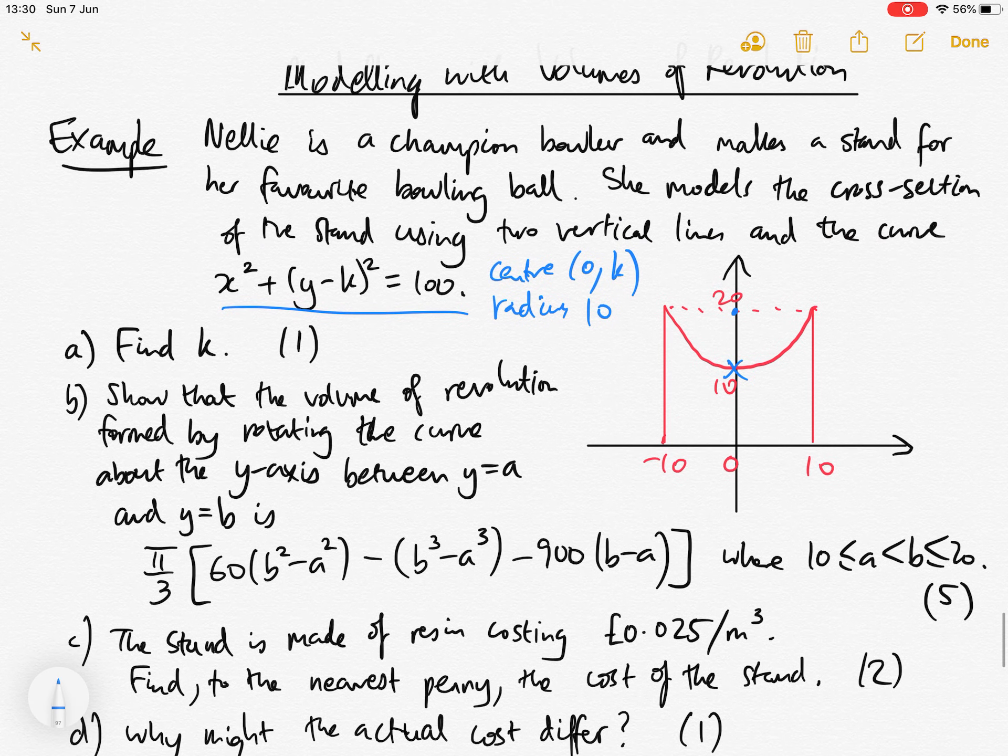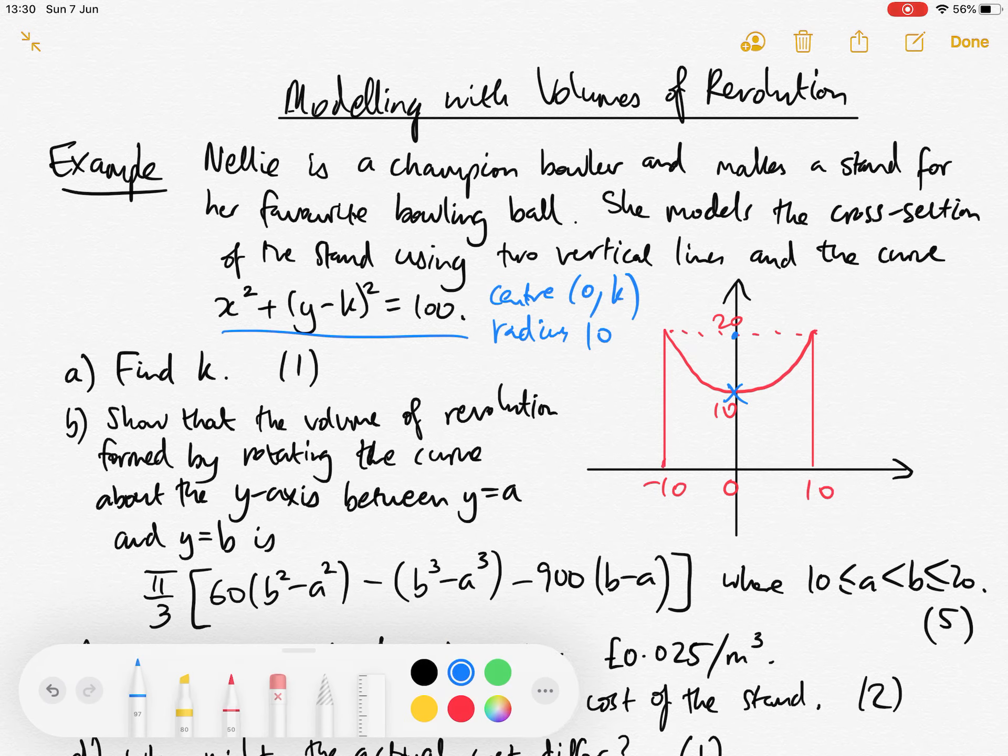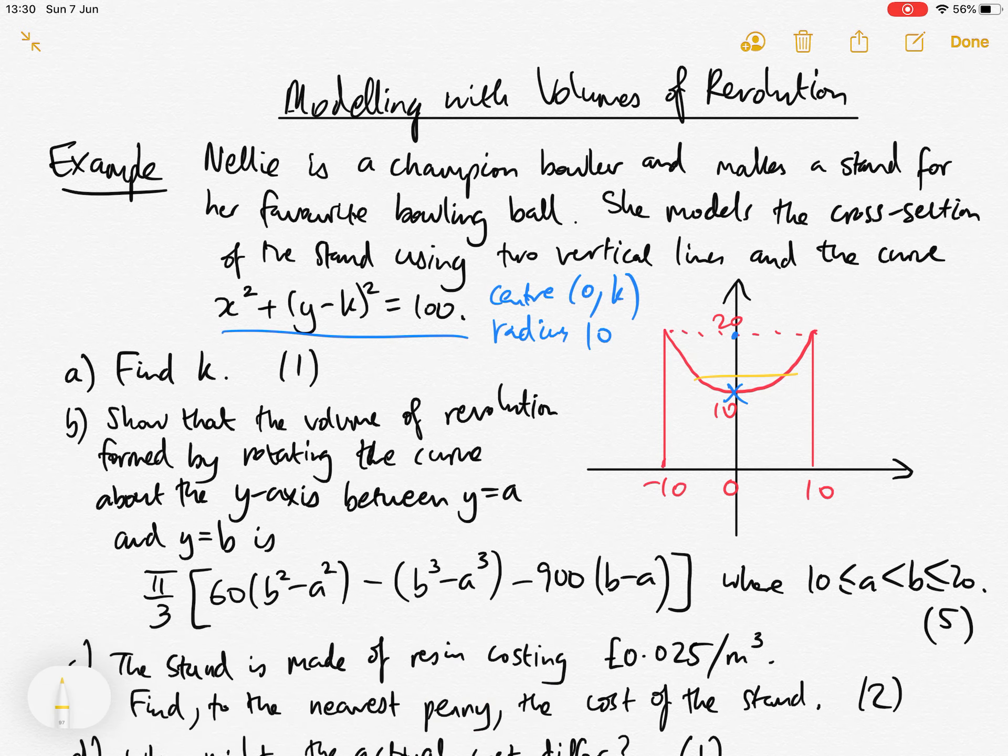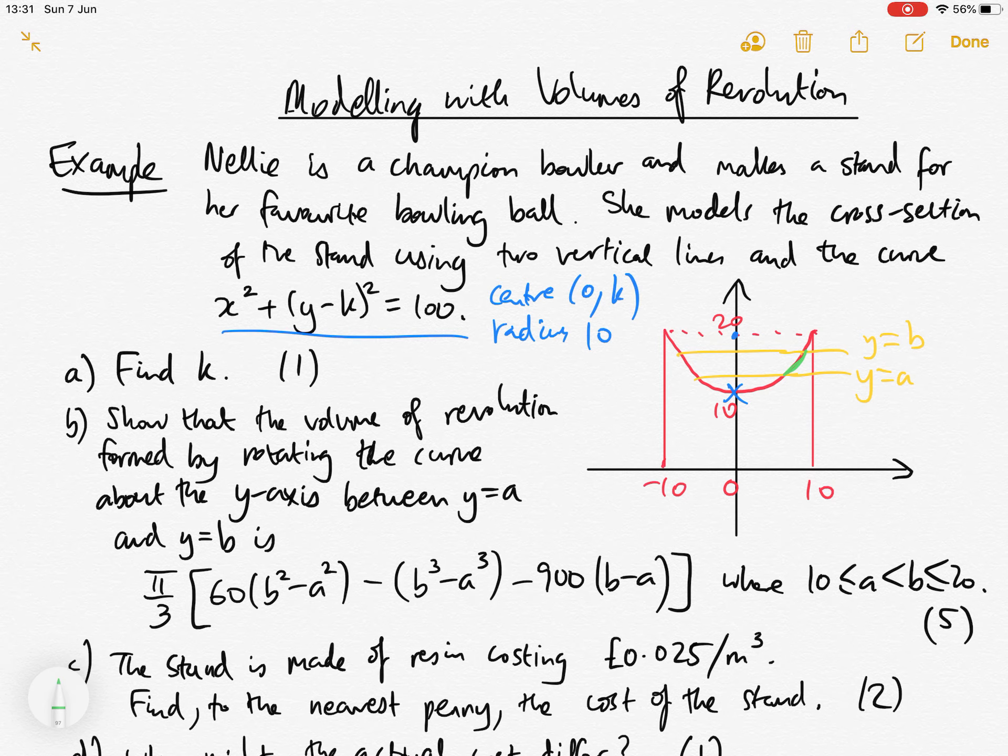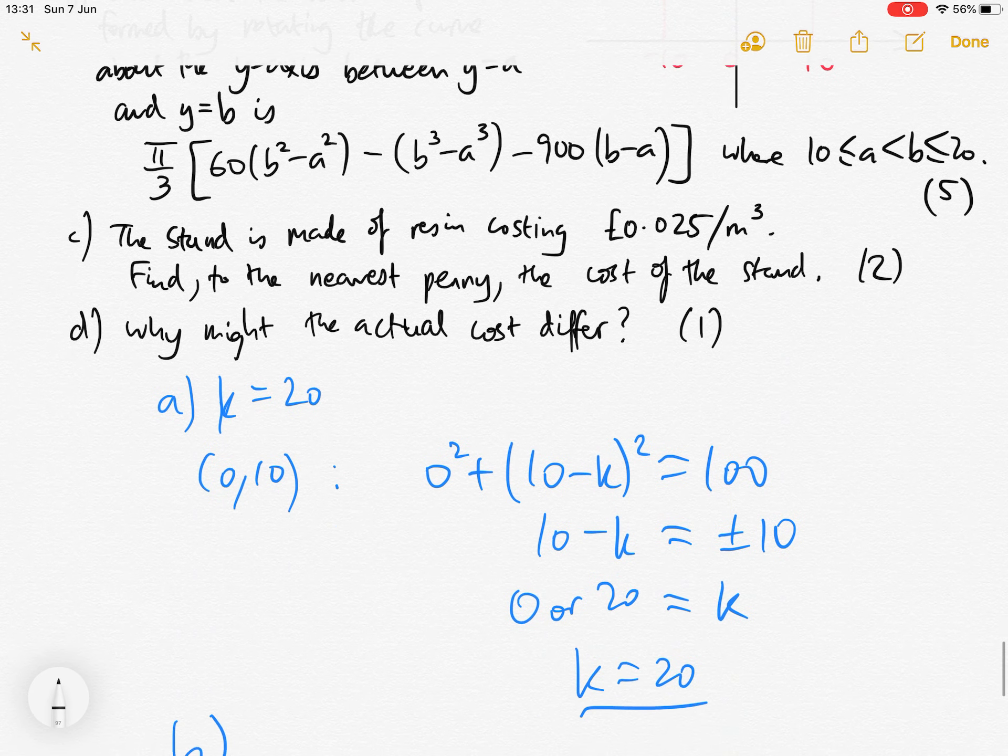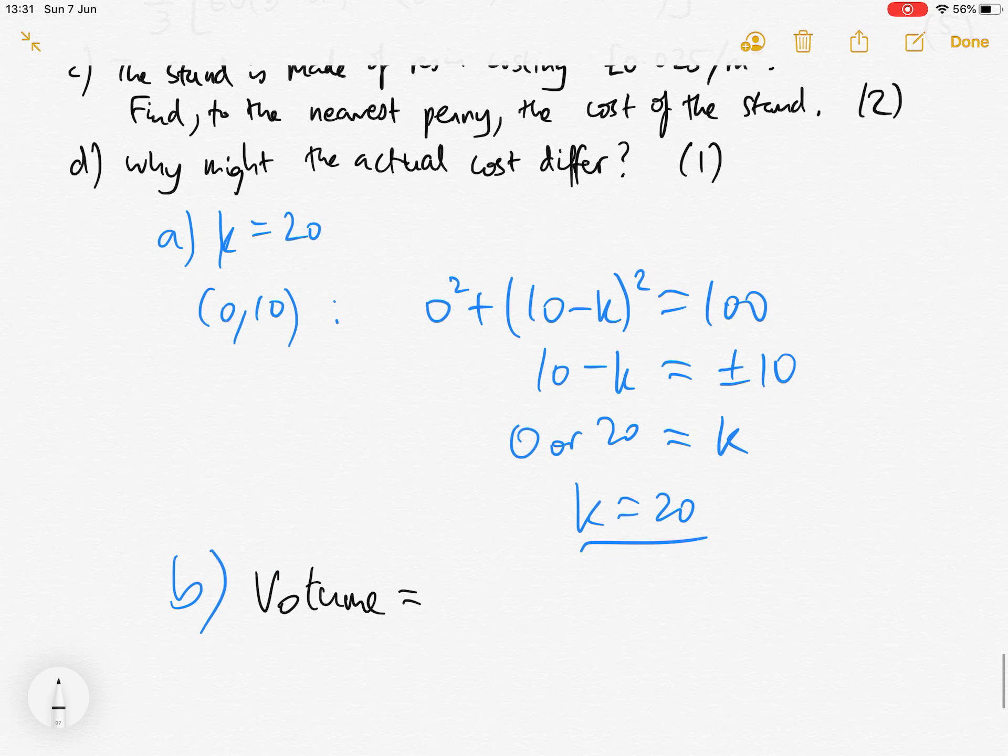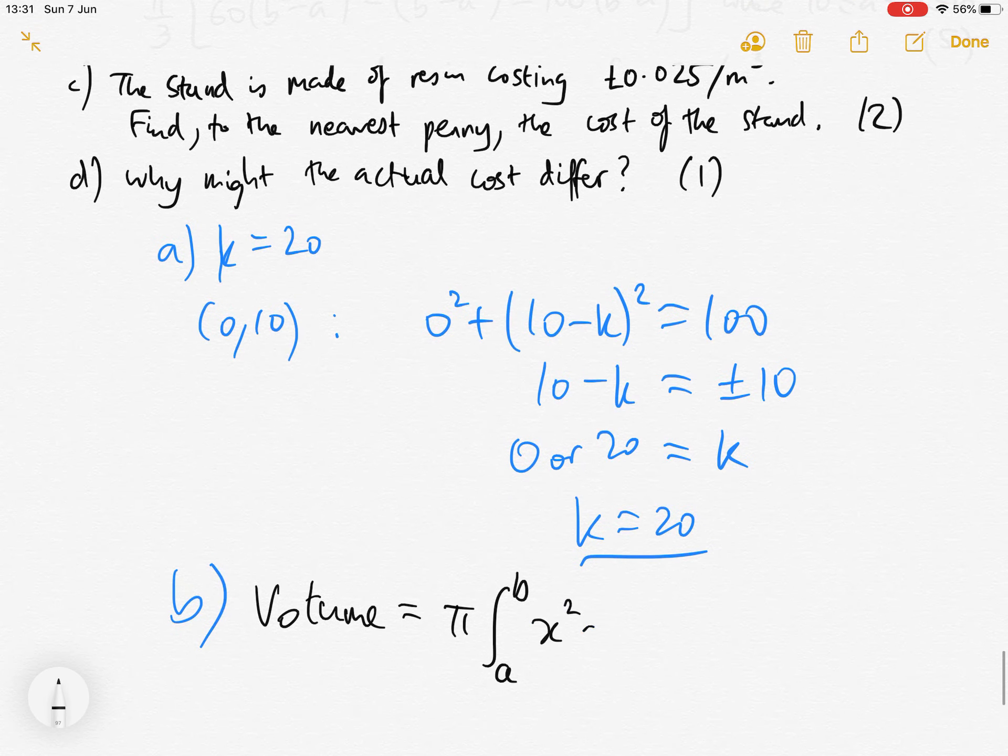Part B: Show that the volume of revolution formed by rotating the curve about the y-axis between the lines y equals a and y equals b is given by this expression. So y equals a and y equals b are two lines here. We're rotating a small part of the curve around the y-axis to form a solid of revolution. To find the volume, it's the integral of pi from a to b of x squared dy.